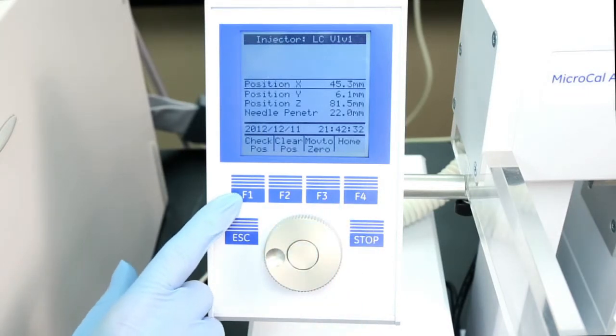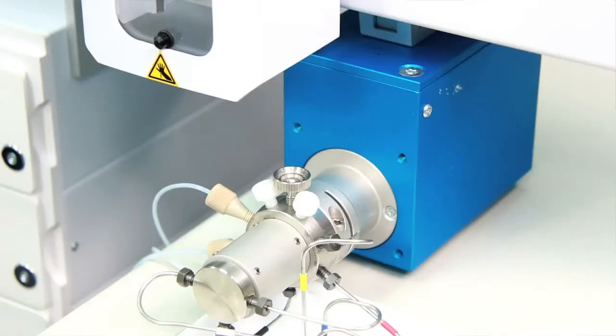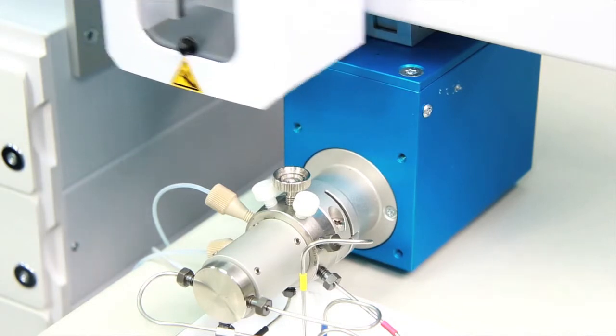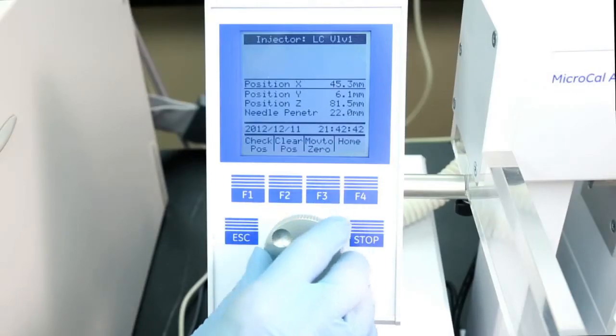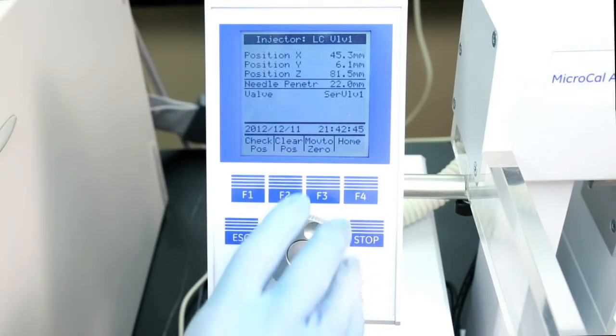Then press the F1 button to check position, and the injector unit moves to the previously defined LC valve 1 position. Highlight needle penetration and press Enter.